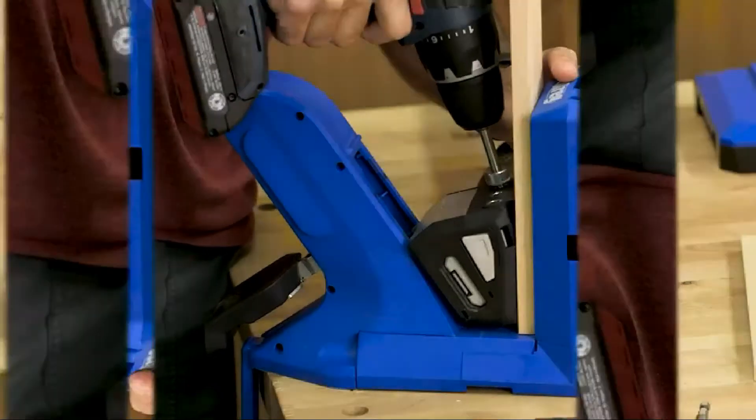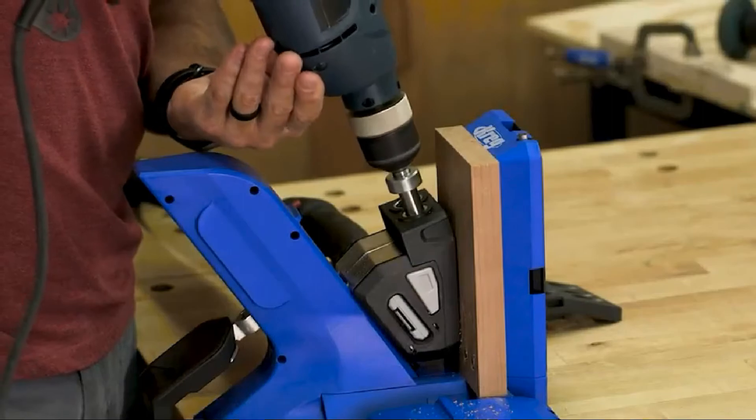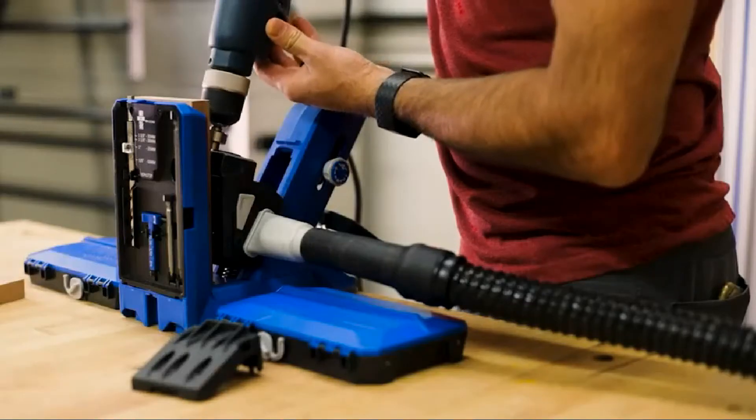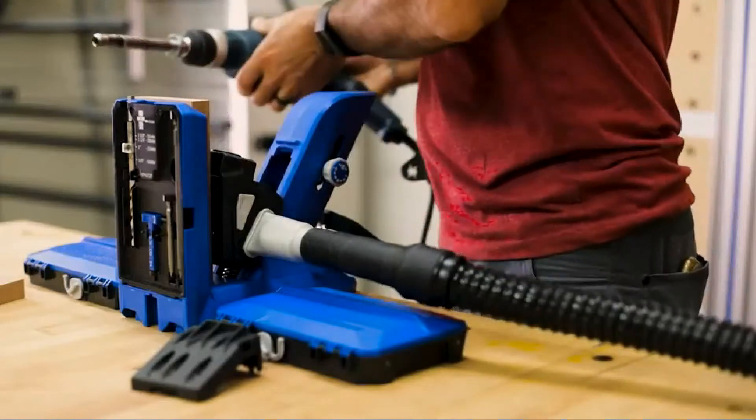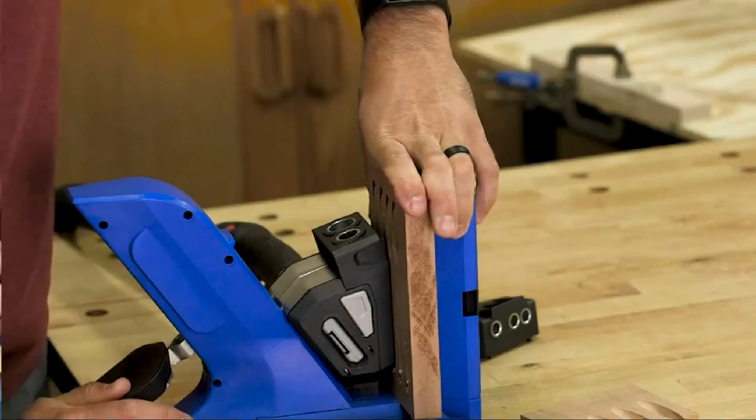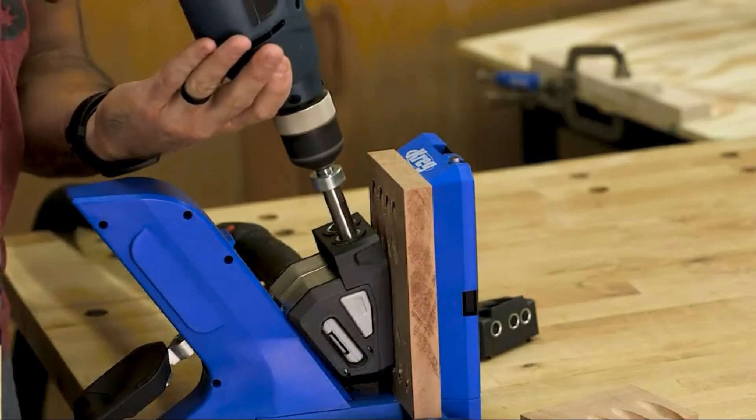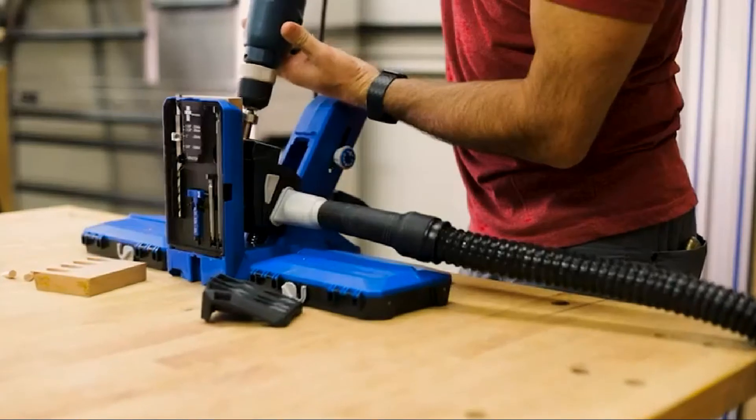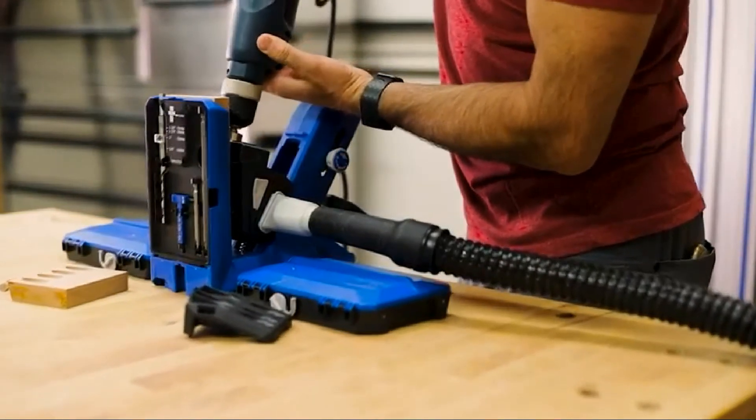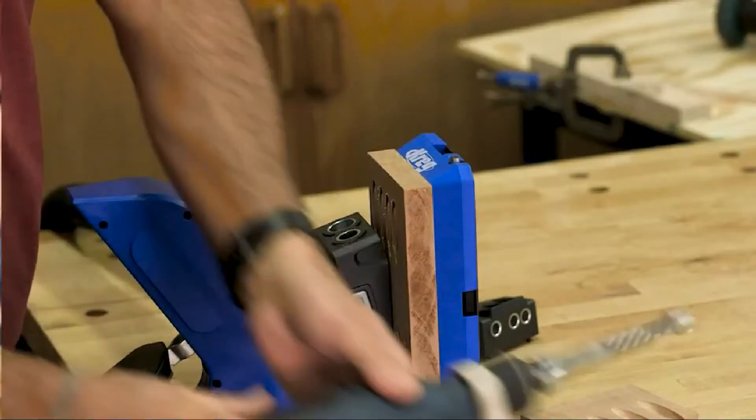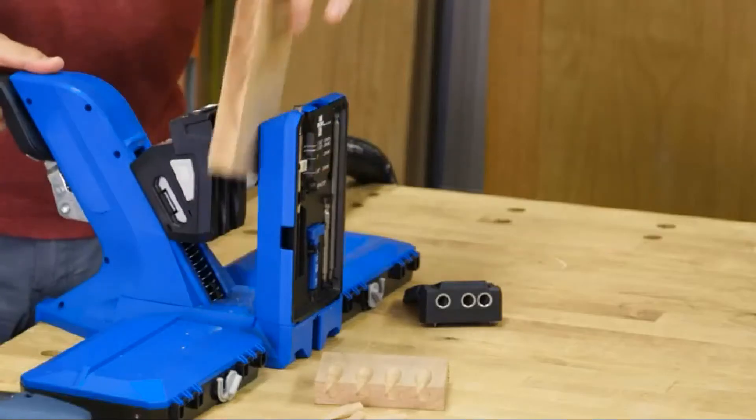The custom plug cutter drill guide kit fits into the pocket hole jig 720 to allow you to create your own pocket hole plugs using wood left over from your project. This means you can match the plug color to your project exactly, and because the plugs have face grain on the end, you can even match grain to hide the plugs better than ever before. The custom plug cutter comes with a bit for creating standard size pocket holes, and you can get a bit that creates plugs for micro pocket holes too, and even large plugs that work with the Kreg jig HD.